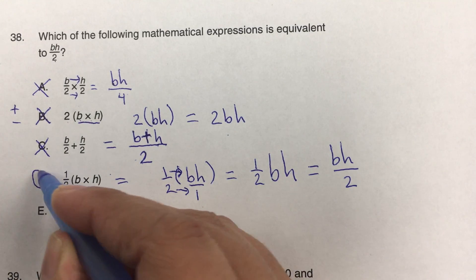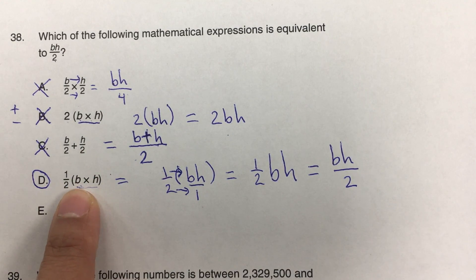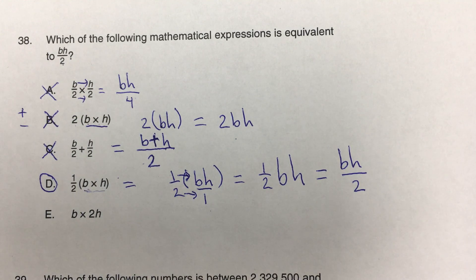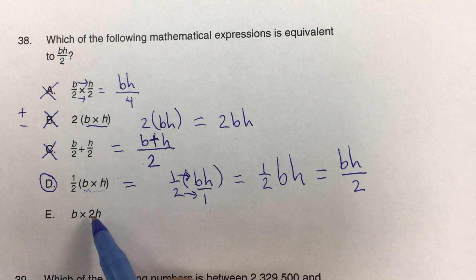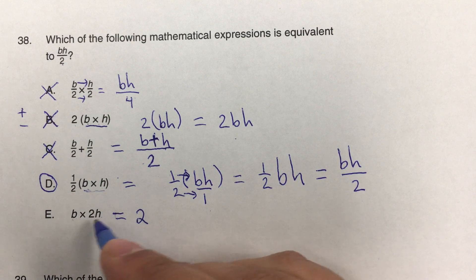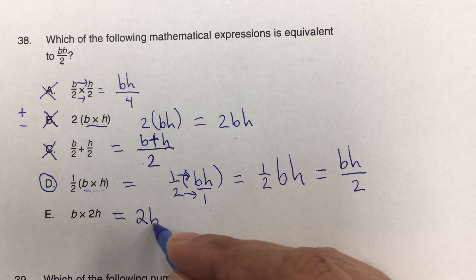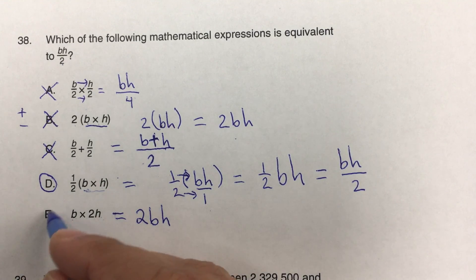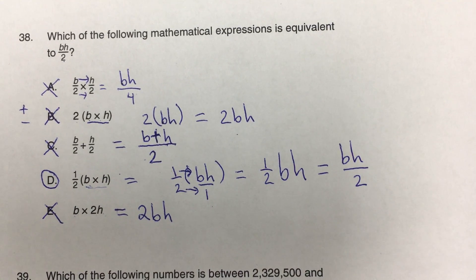In most books they use this formula for the area of a triangle — both forms represent the area of a triangle. For letter E, you have b times 2h, which is just written with the coefficient first in alphabetical order: 2bh. That is not equivalent to bh over 2, so letter E is not the answer.